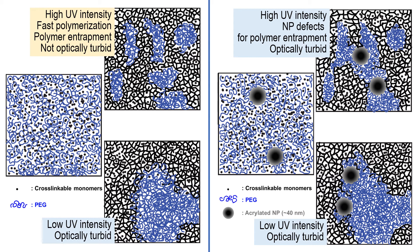On the other hand, when silica nanoparticles are introduced into the PEG resin, the PEG entrapment is hindered by defects from the silica nanoparticles. So even under fast polymerization, optical turbidity can develop, induced by the 1 weight percent addition of silica nanoparticles.